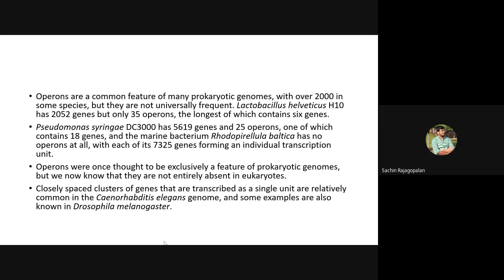Once it was thought that the operon concept was exclusively prokaryotic, but today it has been realized that operons can also be present in lower eukaryotic organisms like Saccharomyces cerevisiae — baker's yeast. Also, closely spaced clusters of genes transcribed as a single unit have been found in C. elegans, a worm, and some examples are seen in the fruit fly Drosophila melanogaster.